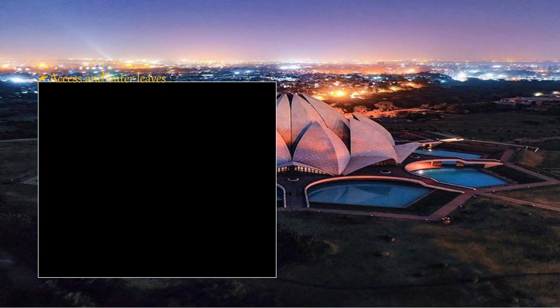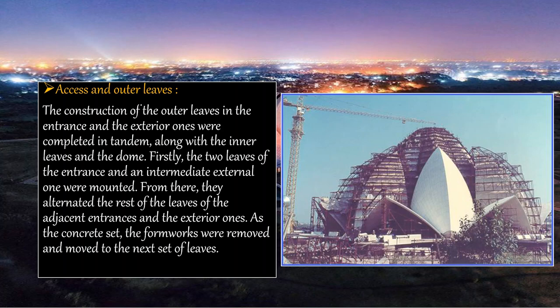For the exterior, the entrance and outer leaves were completed in tandem with the inner leaves and dome. Firstly, the two leaves of the entrance and an intermediate external one were mounted. From there, they alternated the rest of the leaves of the adjacent entrances and the exterior ones. As the concrete set, the formworks were removed and moved to the next set of leaves.